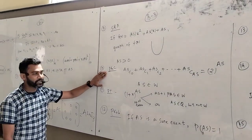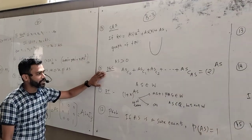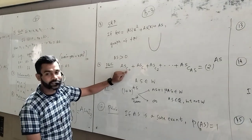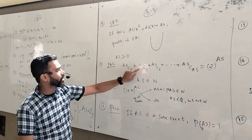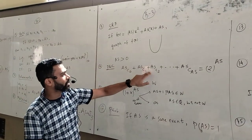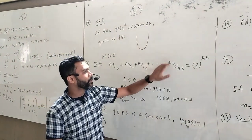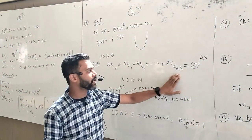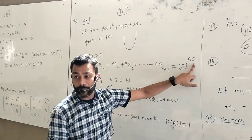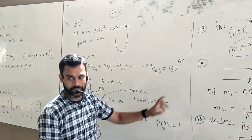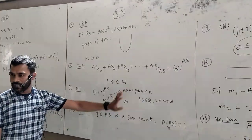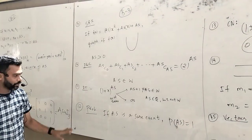The next topic is permutation and combination. Anisar C₀ + Anisar C₁ + Anisar C₂ + ... + Anisar Cₙ is equal to 2 to the power Anisar, where Anisar is a whole number.